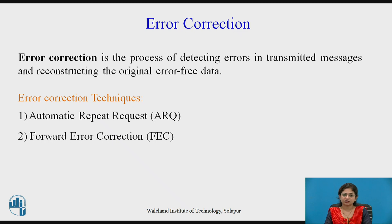Automatic Repeat Request is also known as Automatic Retransmission Request. When the sender sends data and the receiver receives it, the receiver sends an acknowledgement back to the sender. If the acknowledgement gets lost during transmission, the sender waits for a random amount of time — known as backoff time — and retransmits the same data. This is known as Automatic Repeat Request.